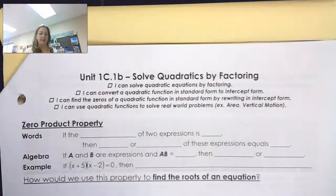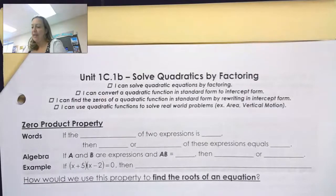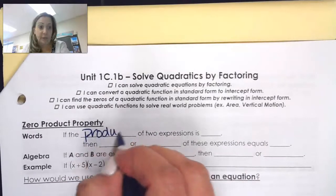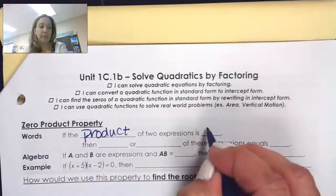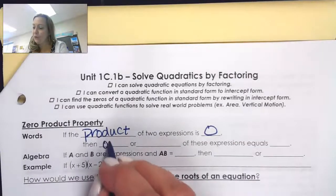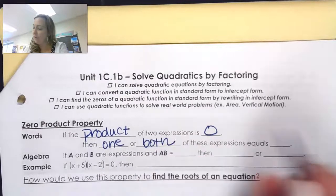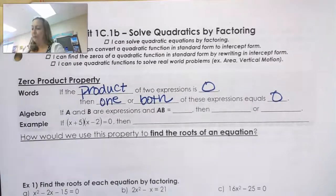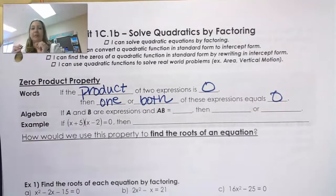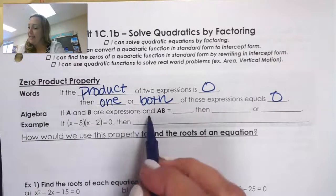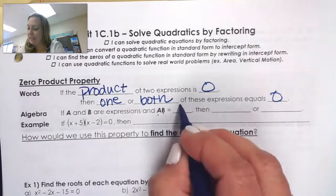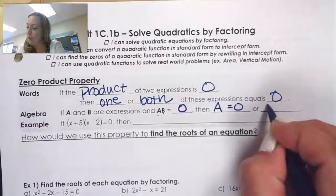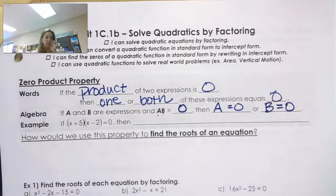First I want to remind you of the zero product property. In words, the zero product property says that if the product — that's when you multiply — when the product of two expressions is zero, then that means either one or both of those expressions equal zero. Algebraically, if A and B are expressions and A times B equals zero, then A has to equal zero or B has to equal zero, or both.